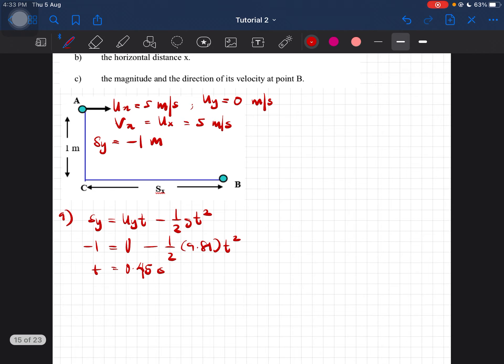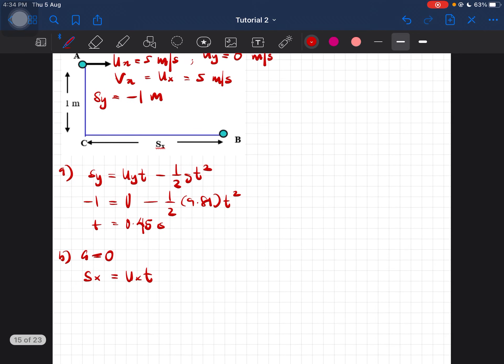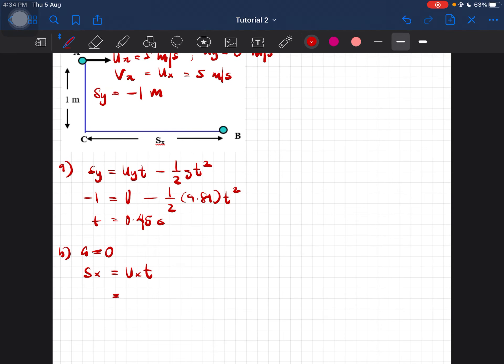Now question B, the horizontal distance. We know that for the horizontal component, acceleration is equal to zero, meaning our formula will end up like this. So sx equals ux times t. ux is 5, t is 0.45 seconds.